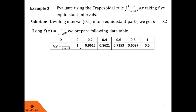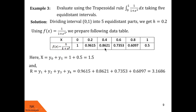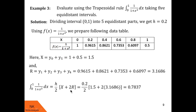Since f(x) is 1/(1+x²), the corresponding values of f(x) are given in the second row — when we substitute x equals 0, the corresponding f(x) is computed accordingly. Capital X is y0 plus y5, that is 1 plus 0.5, which equals 1.5. Capital R is y1 plus y2 plus y3 plus y4, found to be 3.1686. Therefore, by the trapezoidal rule, the value of this integral is h/2 into X plus 2R. With h equals 0.2, X equals 1.5, and R equals 3.1686, when we simplify this, the value of this integral is 0.7837.